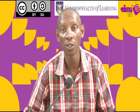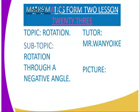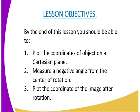In today's lesson, we are in lesson 23, and the topic is rotation, and the subtopic is rotation through a negative angle. By the end of this lesson, you should be able to: number one, plot the coordinates of an object on a Cartesian plane; number two, measure a negative angle from the center of rotation; and number three, plot the coordinates of the image after rotation.